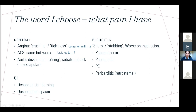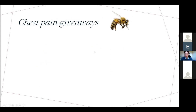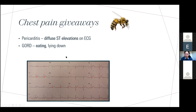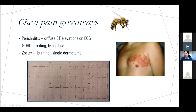Aortic dissection: tearing pain, because it's like tearing through the layers of the aorta. Pericarditis: characteristically relieved by sitting or leaning forward, because that reduces pressure on the pericardium. On ECG, pericarditis shows diffuse ST elevations — not to be missed, because you can get fixated trying to figure out which leads the AMI is in and not notice they're actually everywhere. Gord: anything to do with eating. Zoster: burning pain limited to a single dermatome; if there's a rash, you're pretty certain.